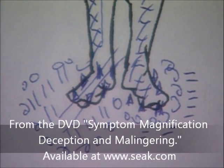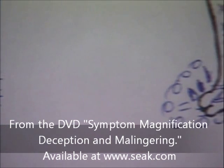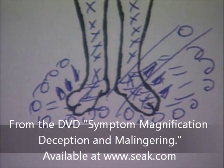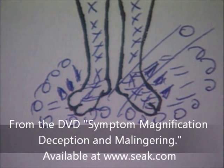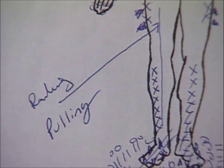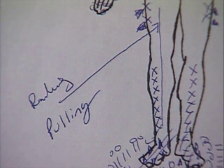Drawings showing expansion or magnification of pain, such as implausible radiation of pain or symptoms drawn outside the body outline. 'I particularly hurt here' indicators include examinees who add explanatory notes, circle painful areas, draw lines to demarcate painful areas, or use arrows.